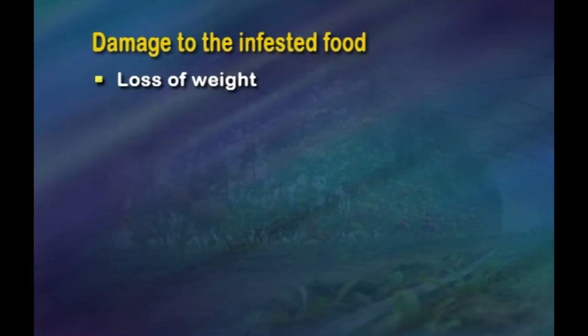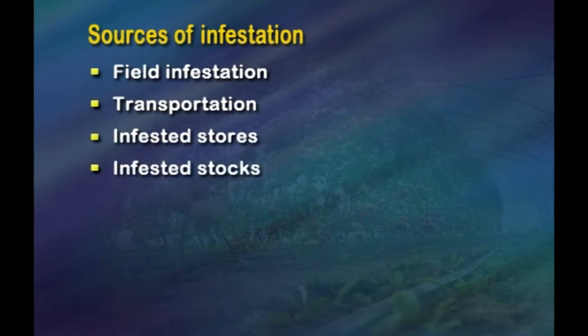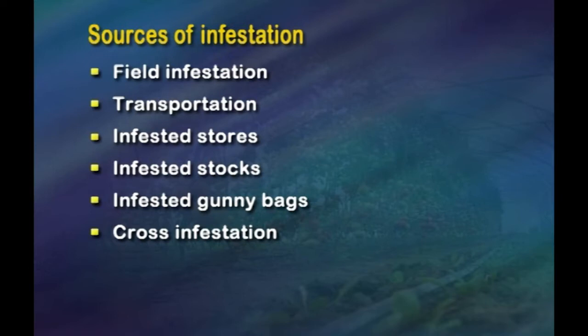Damage by insects can be broadly classified as loss of weight — losses in weight can be known by weighing in and weighing out a particular lot of produce; insect infestation can be estimated by count or weight method, using weight-by-volume ratio before and after storage. Loss of quality: insects eat away the endosperm which affects the quality and nutritive value; gluten quality is also lost in the case of wheat. Loss of hygienic value occurs when grain is contaminated with excreta of rodents, dead insects and insect excreta.